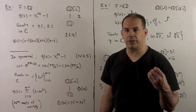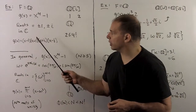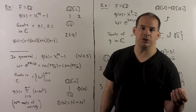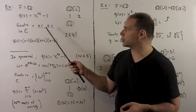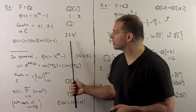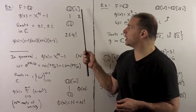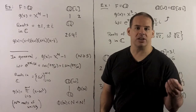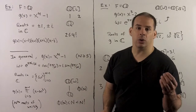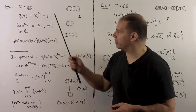Here are two extremes of the theorem, both over the rational numbers. First, we have the polynomial g(x) = x⁴ − 1. The roots of g in the complex numbers are ±1 and ±i, giving a complete factorization into linear factors. We note that Q adjoin i contains all roots of g, and we have a degree 2 extension. Note that 2 is less than or equal to 4 factorial, where 4 is the degree of the polynomial.